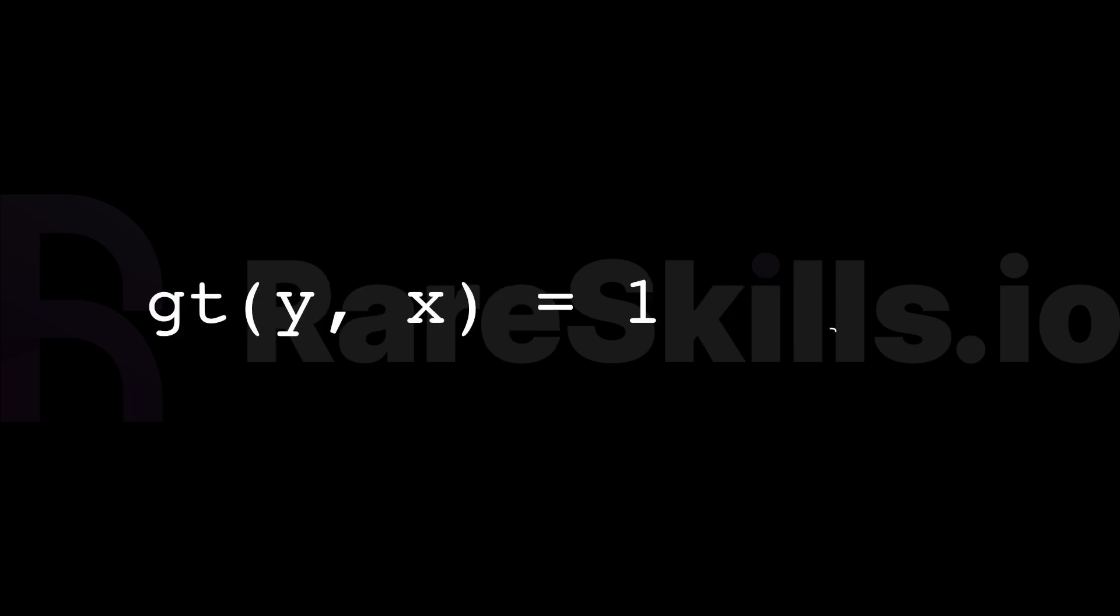gt xy returns 1 if y is greater than x, and 0 if y is less than or equal to x. The closest Solidity analogy would be uint of y is greater than x, but unfortunately Solidity does not allow us to cast booleans to uints.